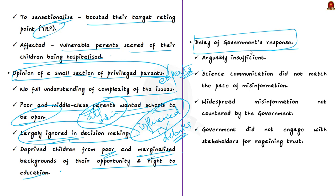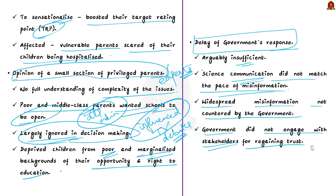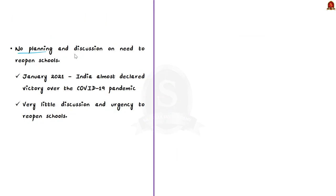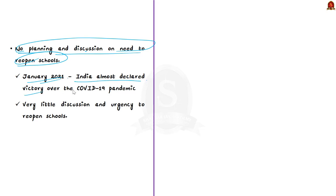The third reason is the delay in government's response — the government's communication did not match the pace of misinformation and it did not effectively engage with all stakeholders to regain trust. The fourth reason is that there was no planning or discussion on the need to reopen schools, even in early January 2021 when India had almost declared victory over the pandemic.